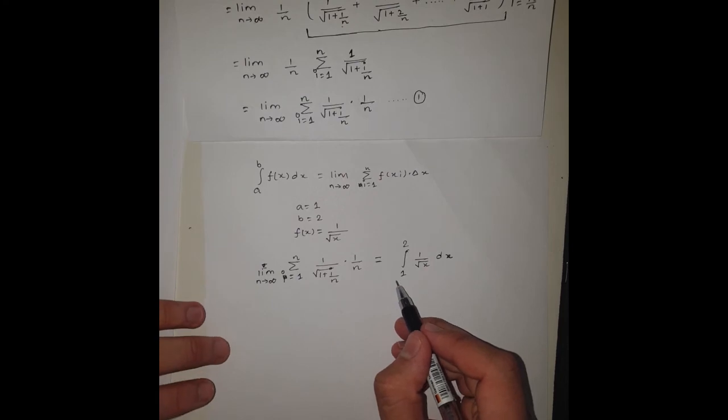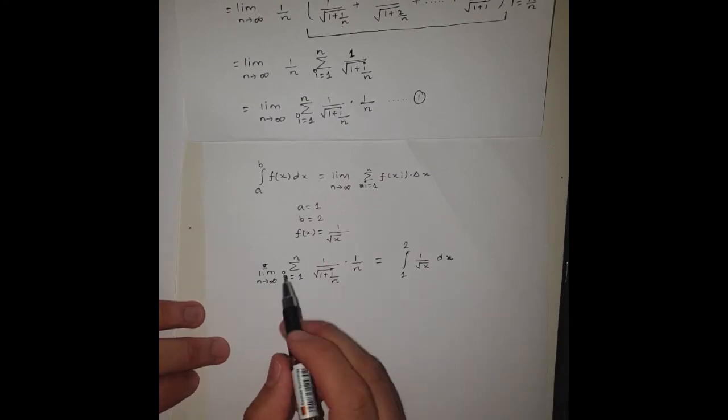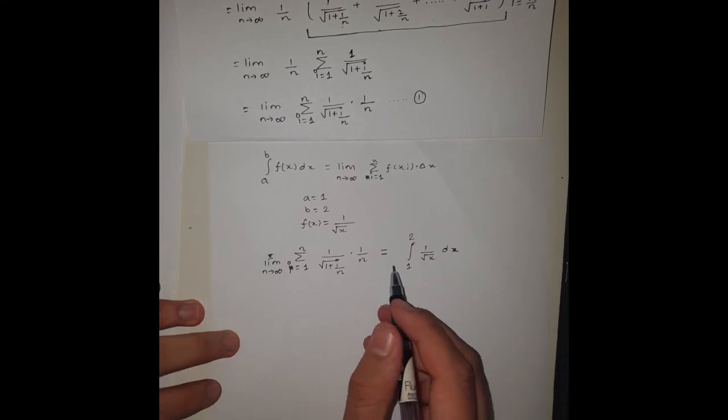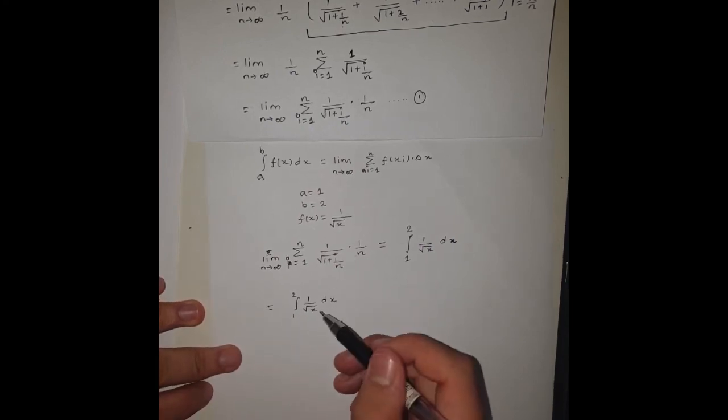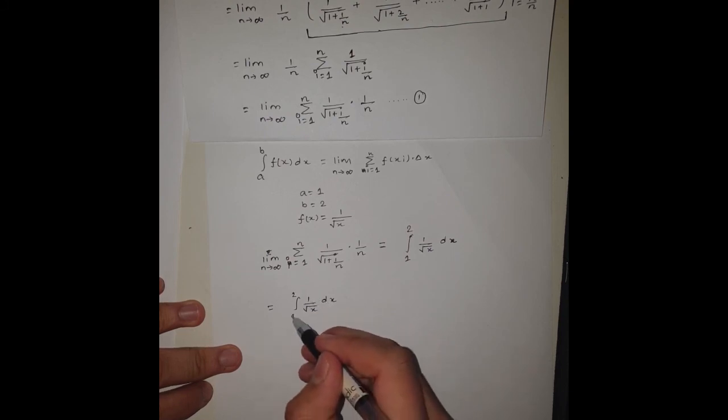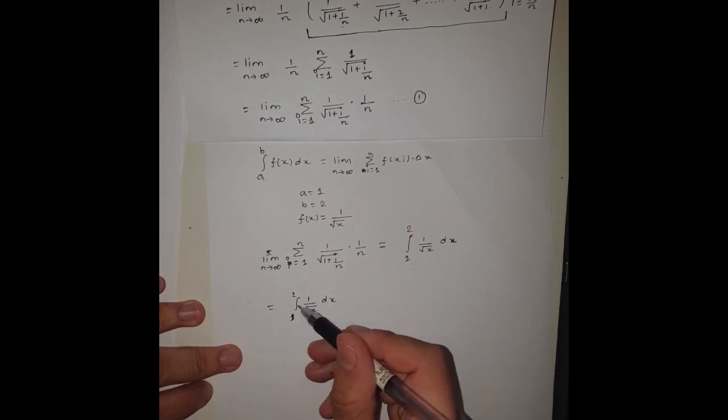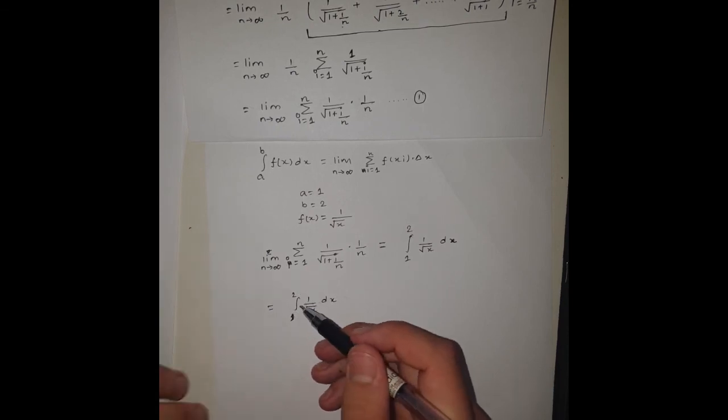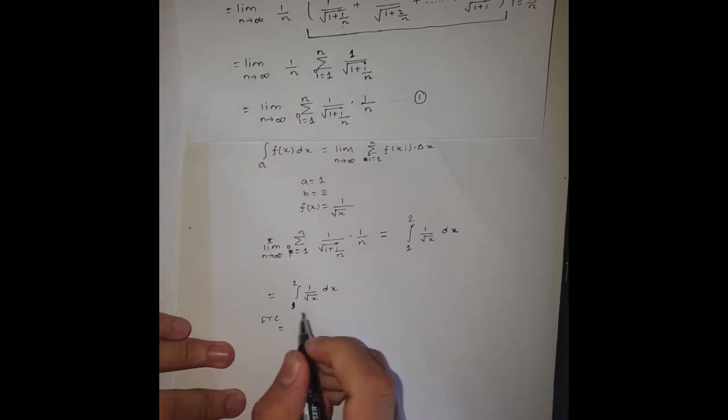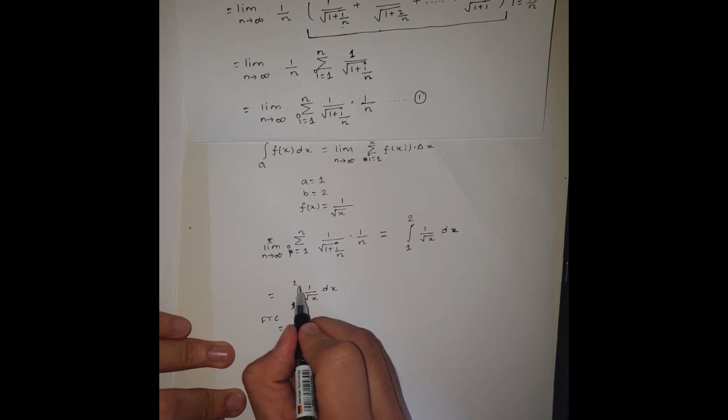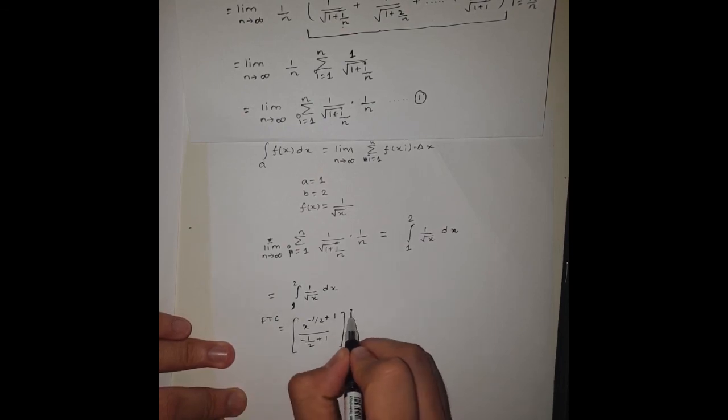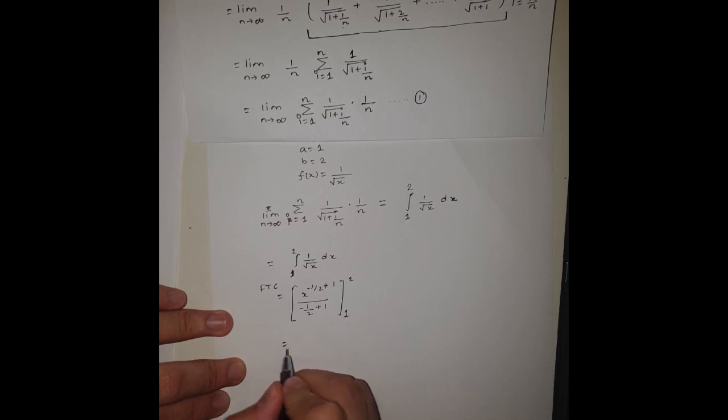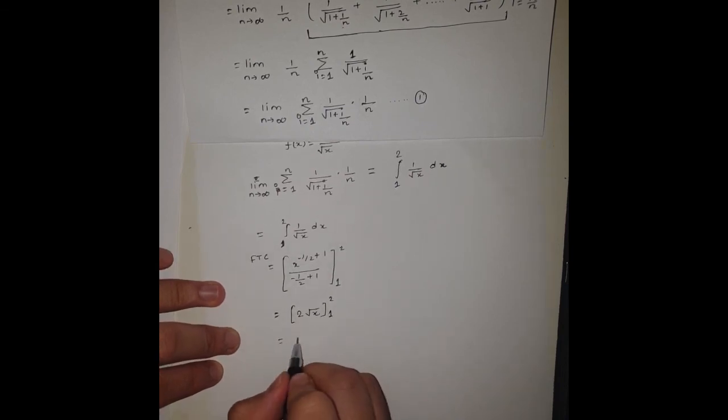Now we can see that this definite integral is far more easier to solve than this Riemann sum. We will solve the definite integral, and as we can see the function f(x), the integrand is continuous on the limits 1 and 2. If it is continuous over the interval 1 and 2, then we can use the fundamental theorem of calculus. Using the fundamental theorem of calculus, what we can say is x to the power minus 1/2 plus 1, divided by minus 1/2 plus 1, and solving this we get the solution.